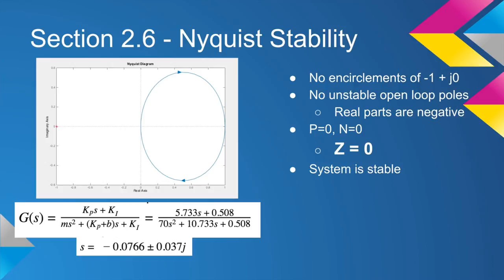From the Nyquist diagram, you can see that there are no encirclements of negative one plus zero j, or in other words, N is equal to zero. Since P and N are both equal to zero, Z is equal to zero and the system is stable.